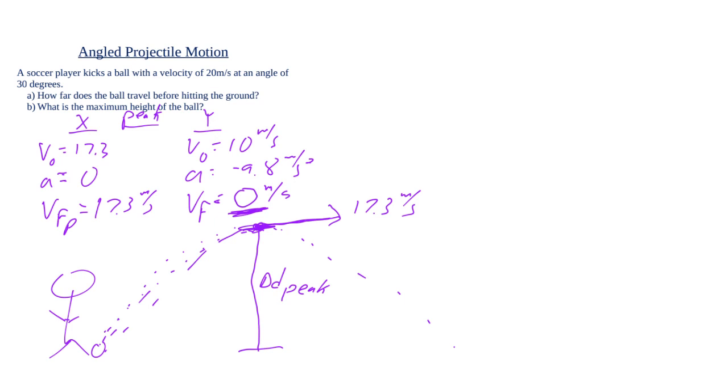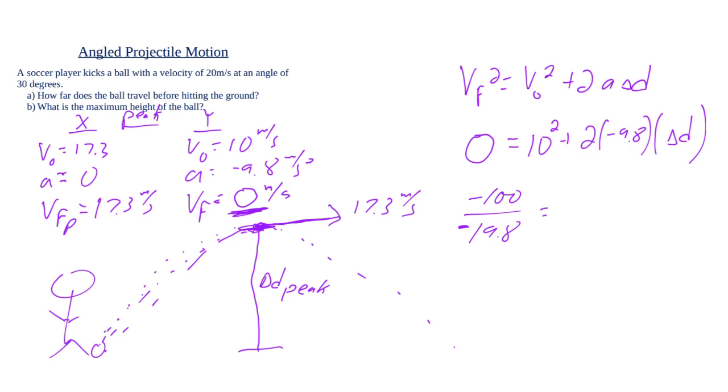Let's choose our equation to find that. For this one, we're going to be using v final squared equals v initial squared plus 2ad. The v final is zero at the top. The initial is 10. Then we're going to go negative 9.8, and we're looking for delta d. To do some algebra, we got negative 100 divided by negative 19.8. That gives us a max height of 5.1 meters.